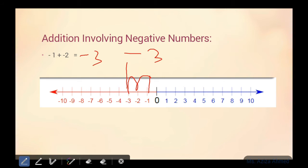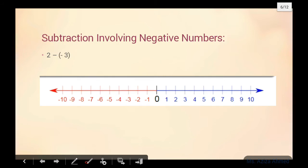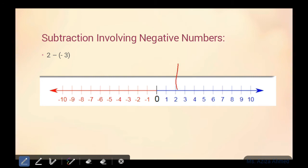Ab ek example subtraction ki lete hain — subtraction involving negative numbers. Humare paas do number given hain. Pahla number positive hai. Ismein humne kya karna hai? Minus karna hai negative three ko. But before that, mein aapko batati chaloun ke hum subtraction positive numbers ke saath kaise karte thay. For example, hum positive numbers ke saath subtraction isi tarah karte thay.